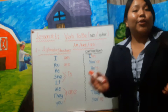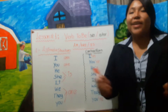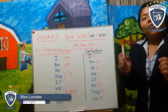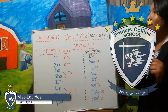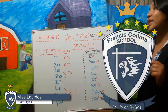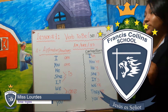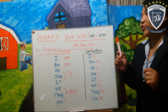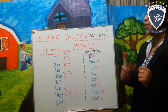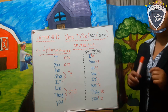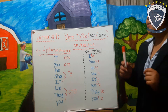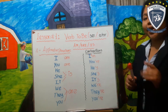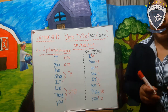Hello everybody, welcome to our English class. We are going to talk about, in lesson number one, the verb to be: am, are, is. Vamos a hablar en nuestra lección número uno acerca del verbo ser o estar.